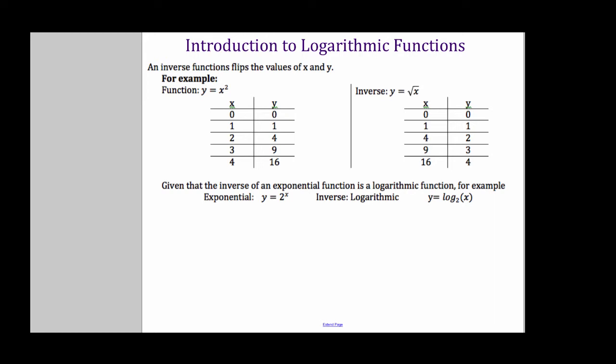So if you look, the function y equals x squared, the inverse of it is the square root of x. The opposite of squaring something is square rooted. So if you look at the table of values, all that happened when the x and the y just flipped in this case. So all my y values are now my x values for the inverse.